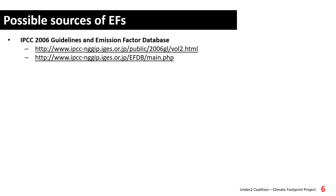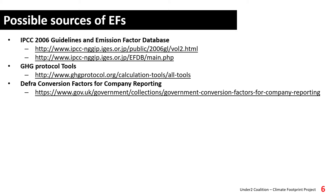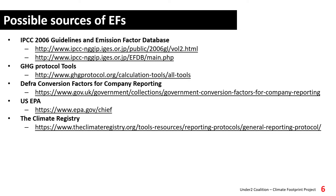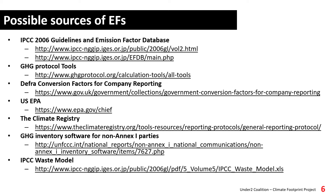Here is a list of possible sources for you to obtain sector-specific emission factors: the IPCC 2006 guidelines and emission factor database; tools from the Greenhouse Gas Protocol; the UK Department for Environment, Food and Rural Affairs conversion factors for company reporting; the United States Environmental Protection Agency; the Climate Registry; the UNFCCC software; and the IPCC waste model.